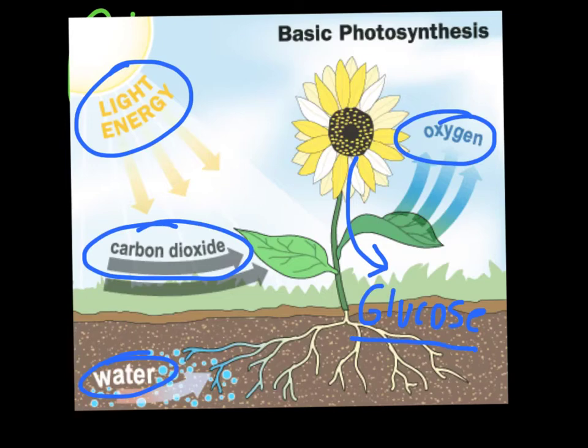As far as basic photosynthesis goes, you just have to know that plants use the energy from sunlight, combined with carbon dioxide and water, to produce oxygen and glucose.